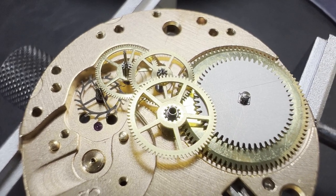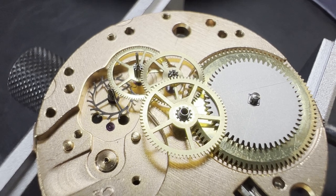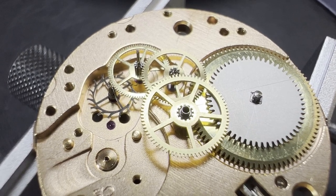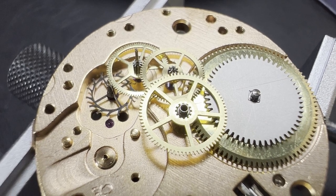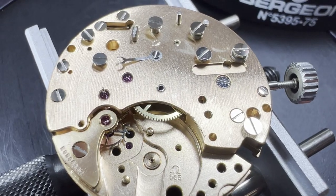From largest to smallest, it is the going barrel with the ratchet wheel on top, the centre wheel which does one full rotation each hour, then the third wheel, fourth wheel and the escape wheel with its different shaped teeth to interface with the pallet forks. The train wheel bridge goes back on as well as the escape wheel cock.